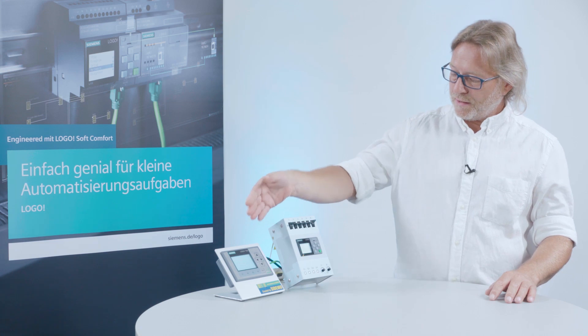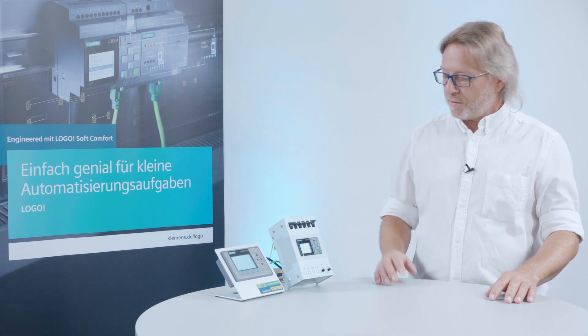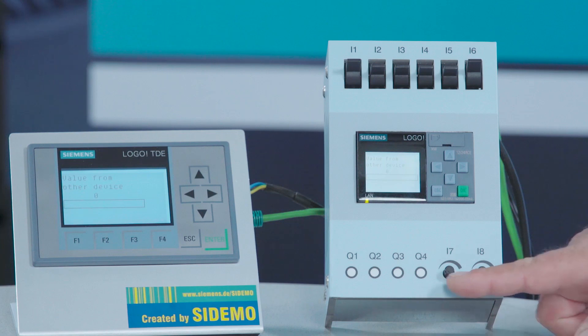How to display analog values as a trend display on Logo devices. I have created a little demo system here. I can influence the analog inputs 1 and 2 using this checkbox.